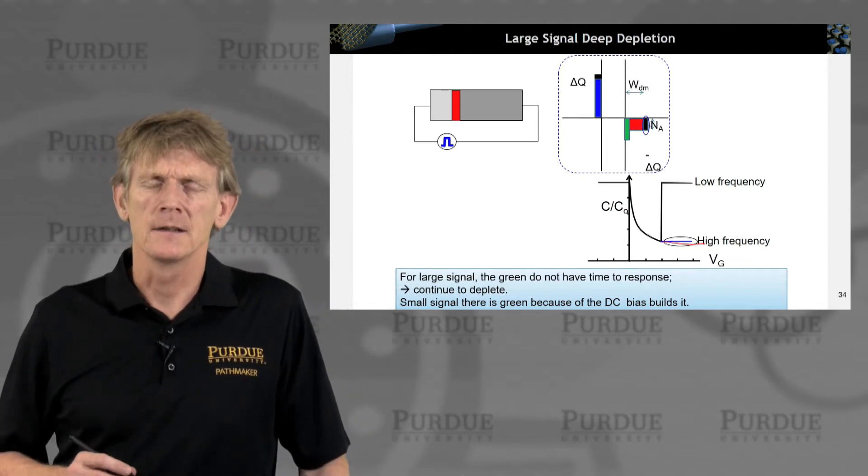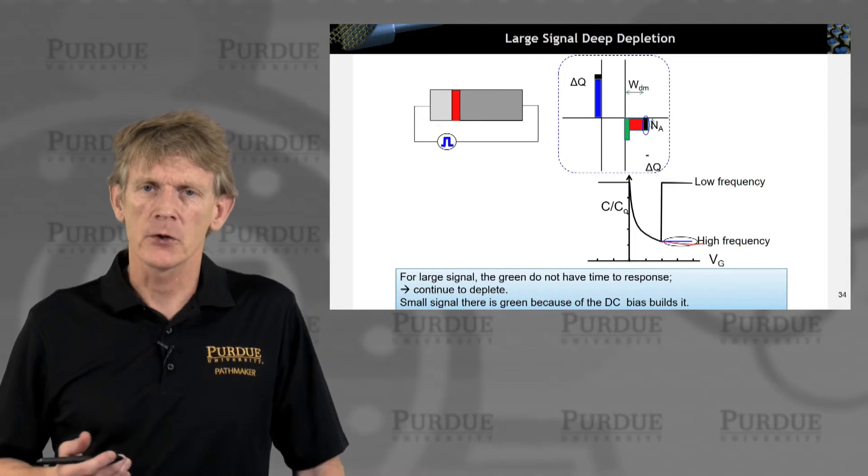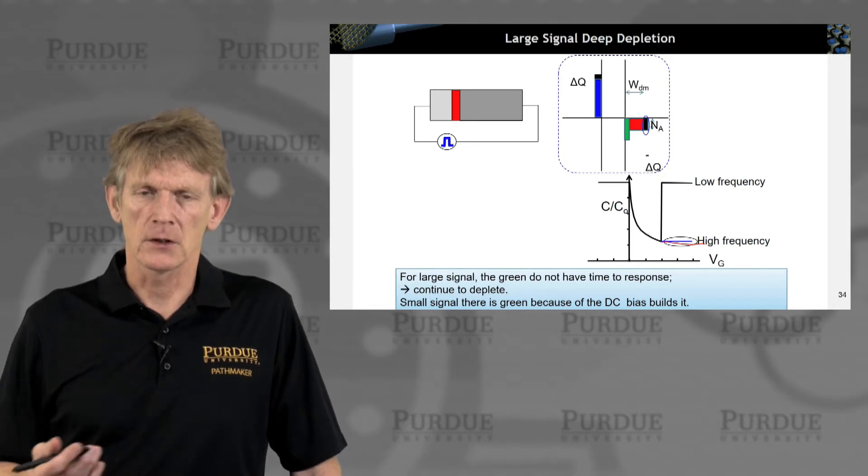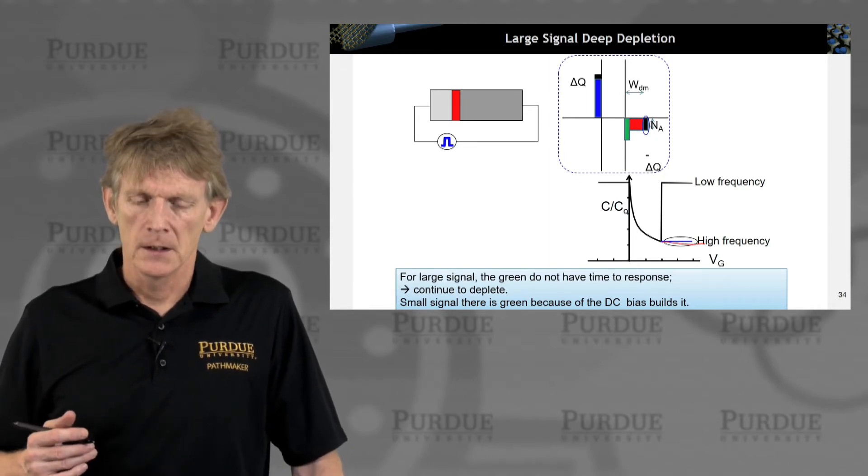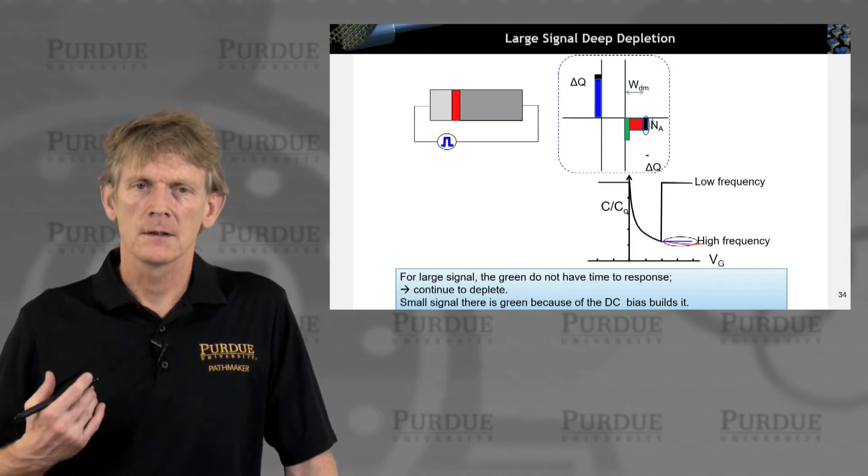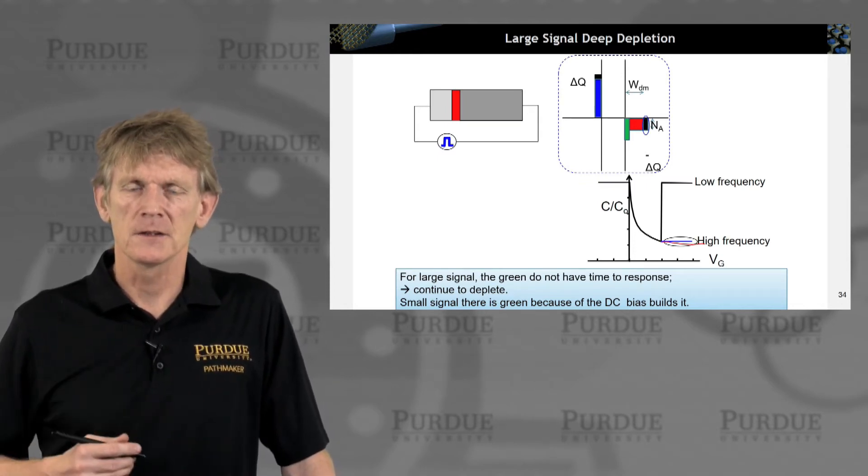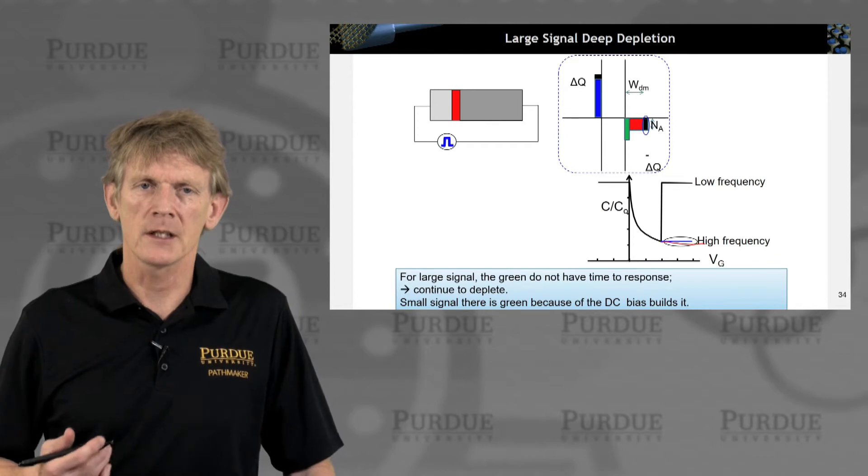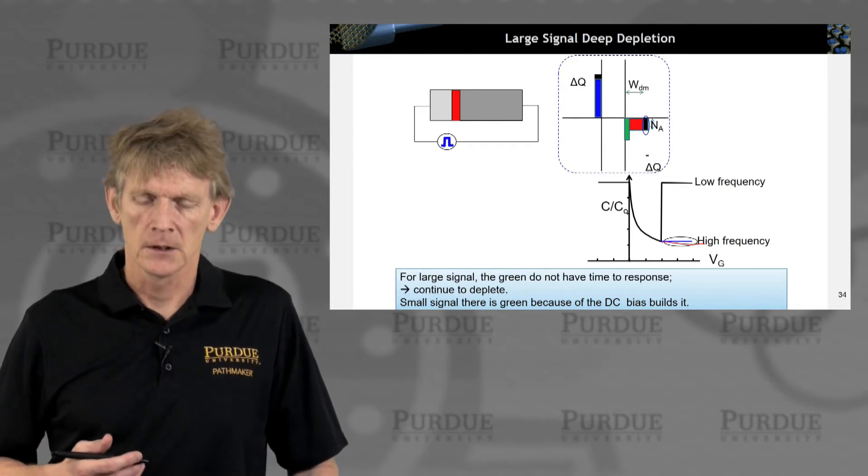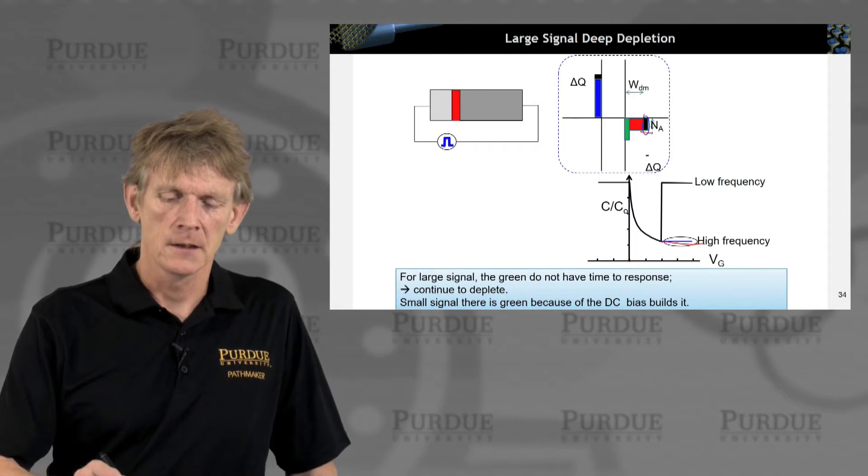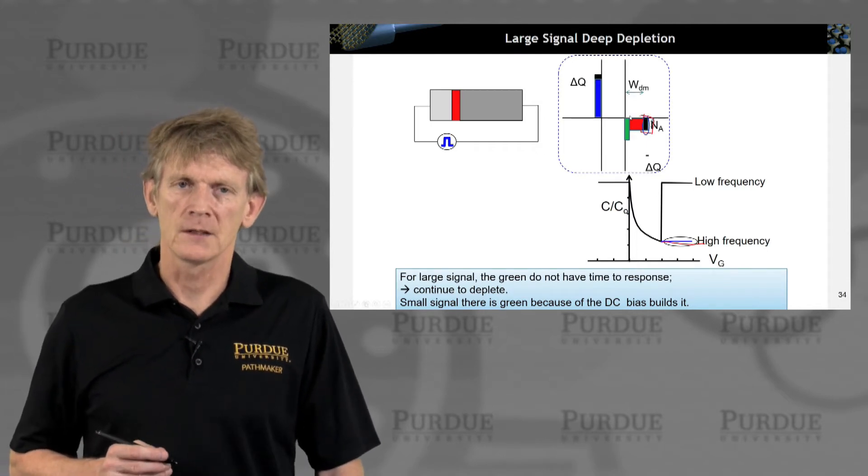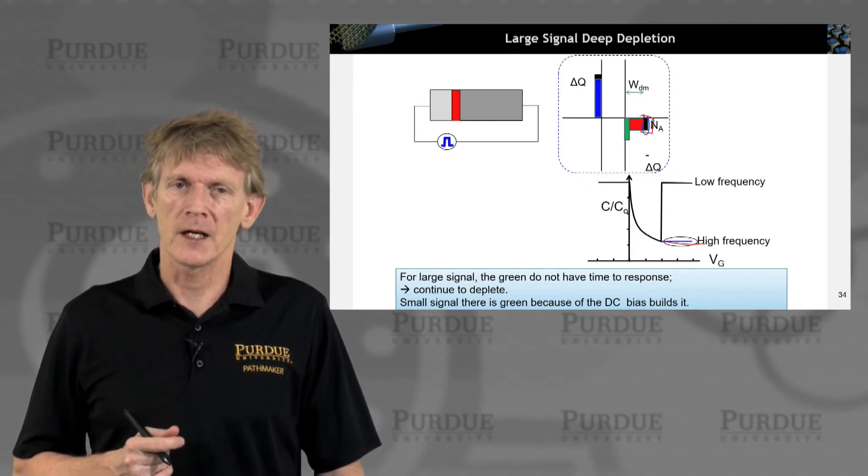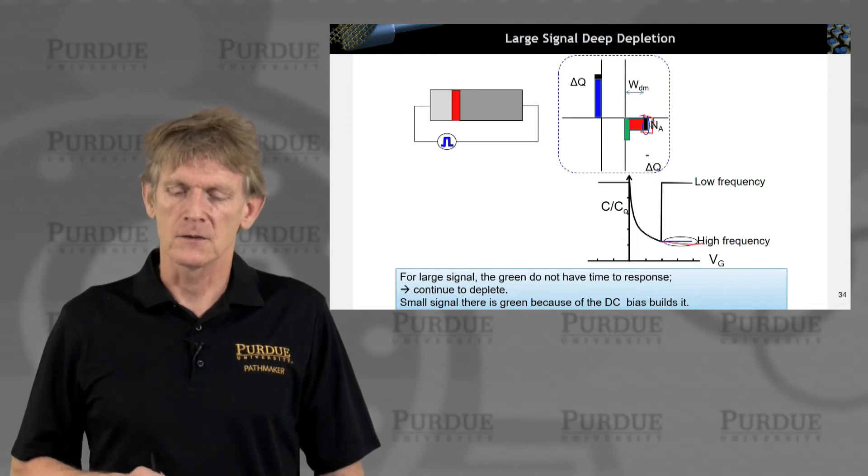As mentioned before, the electrons in the inversion cannot respond fast enough, so they will just sort of sit there. And where do you get the charge in the system? Well, the only thing that can respond here fast enough are the majority carriers in the depletion region. So you're starting to pile up charge here and increase the depletion region as a function of voltage. And those are the only carriers that can make it fast enough to balance the charge in the system.